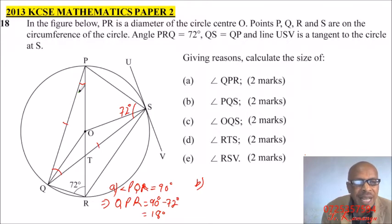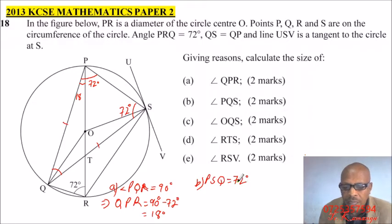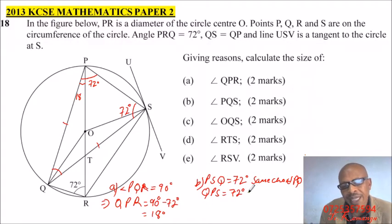If that angle is 72, it means that this angle, we have found it is 18. So what it means is that the whole of this angle is 72. Because PQS is an isosceles triangle. PQ is the same as QS. So we say, to give reason, PSQ is equals to 72 degrees, same chord, subtended by the same chord.